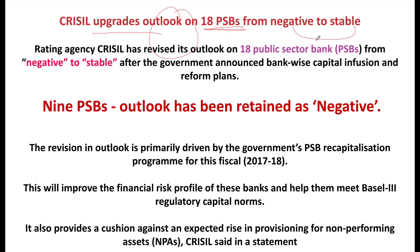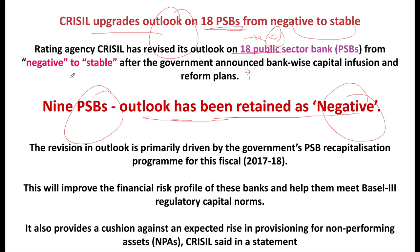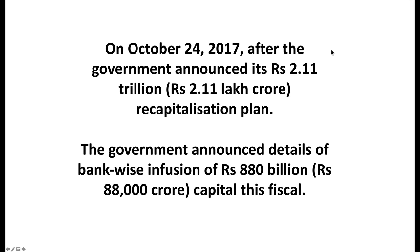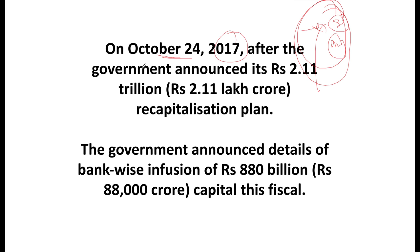CRISIL has upgraded the outlook on 18 public sector banks from negative to stable because of capital infusion. However, nine PSBs have had their outlook retained as negative. Most banks' stance was changed from negative to stable because the government agreed to re-infuse capital, thereby increasing the shelf life and viability of these banks. On October 24, 2017, the government had announced a 2.11 lakh crore capital infusion plan over the next two years.